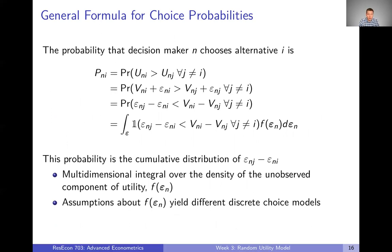Let's write down a formula for these choice probabilities — they're ultimately mathematical expressions. We said that decision maker N is going to choose alternative I if the utility from alternative I is greater than the utility from all other alternatives. We can write the choice probability, denoted capital P sub nI — what is the choice probability for decision maker N and alternative I? Well, we decompose utility into two components: representative utility and the random unobserved utility. We plug those in, replacing the capital U's with capital V plus epsilon on each side.